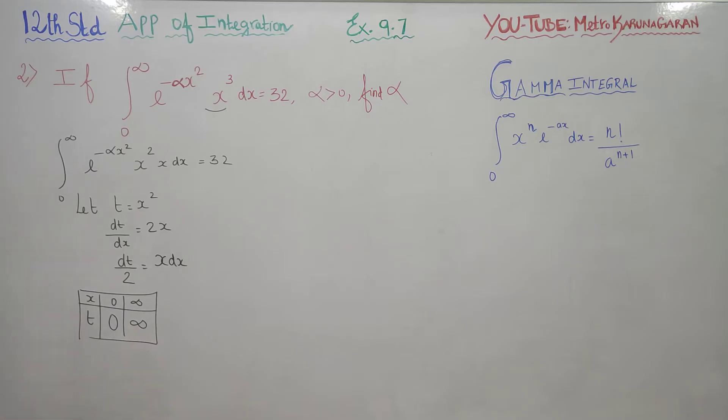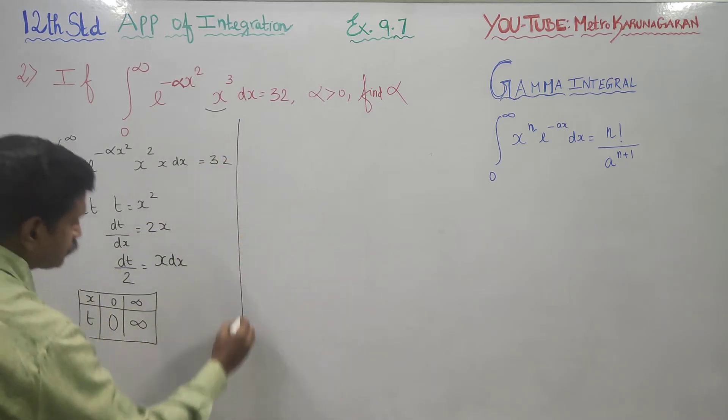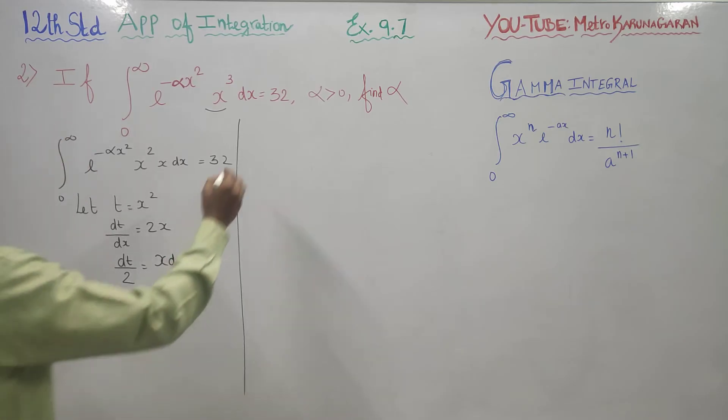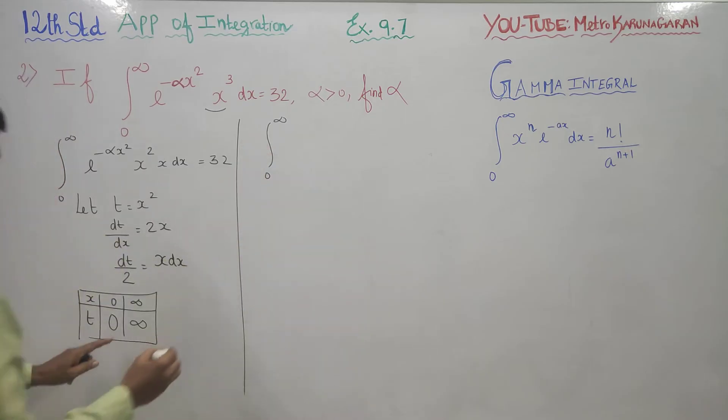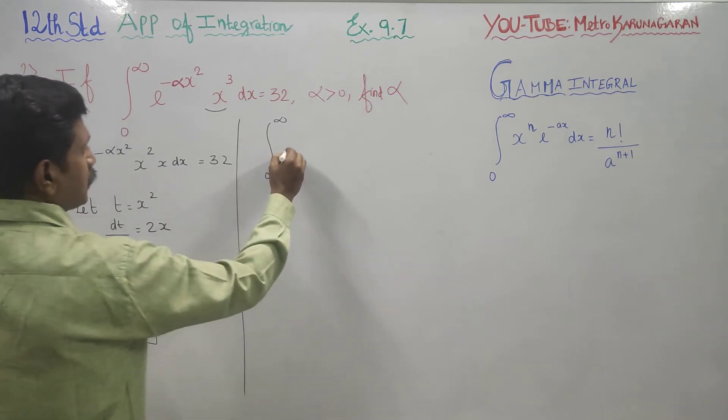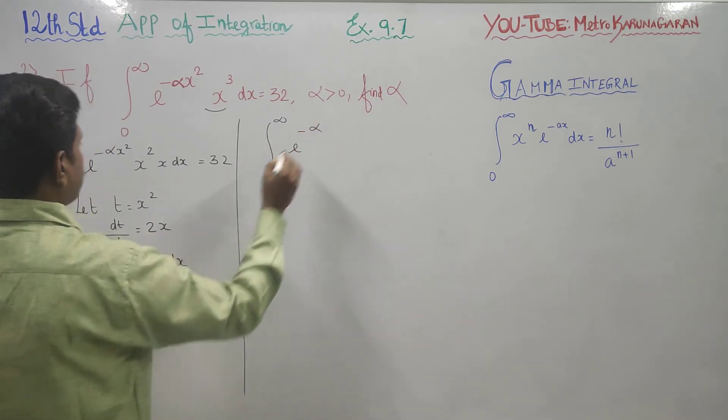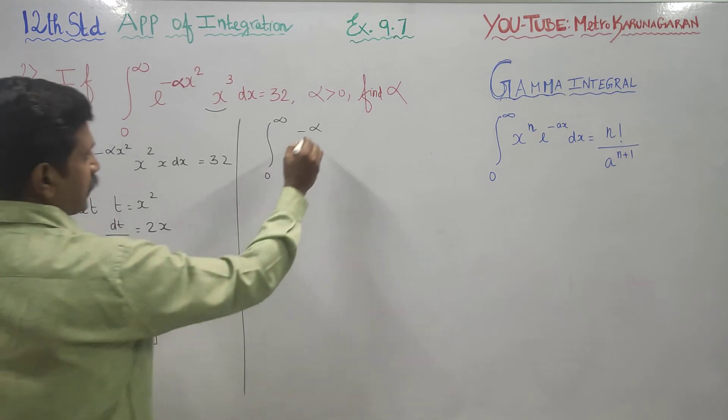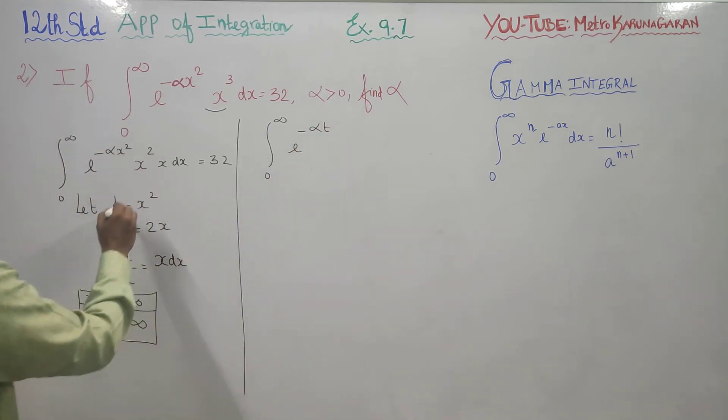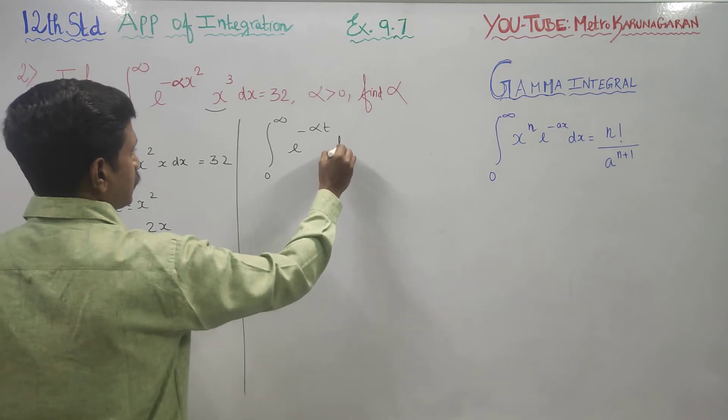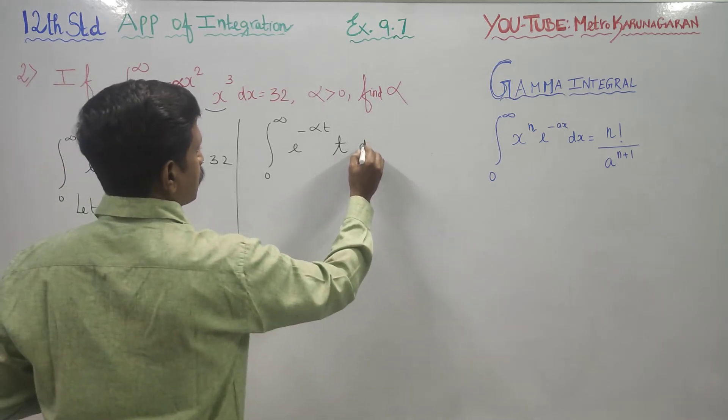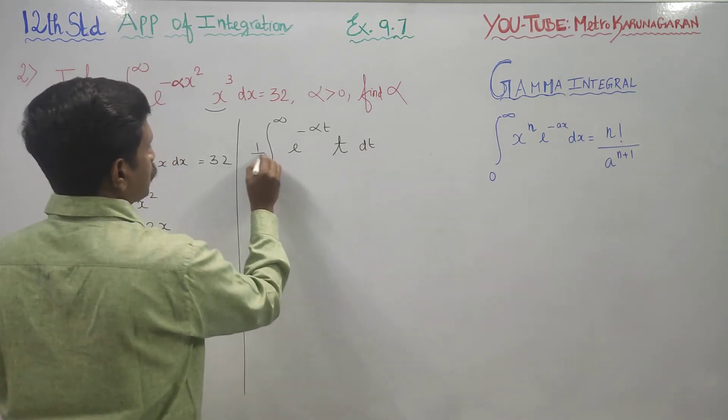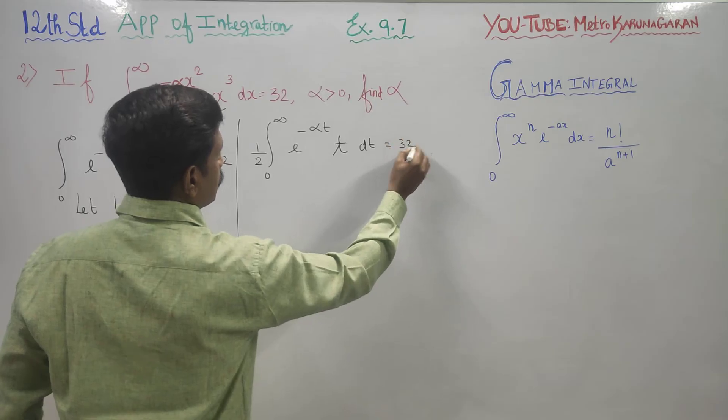I am going to substitute t in the main sum. The limit is 0 to infinity, e to the power minus alpha t, x squared is t, x dx becomes dt by 2, so dt by 2 equals 32.